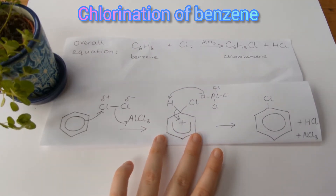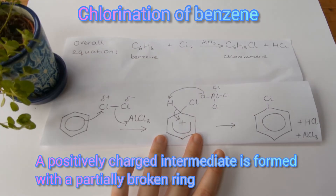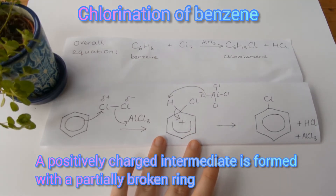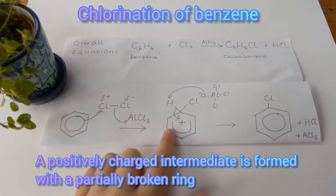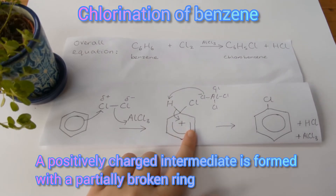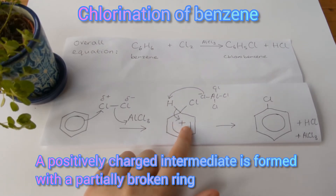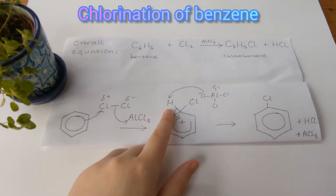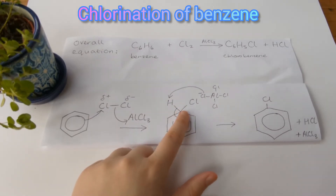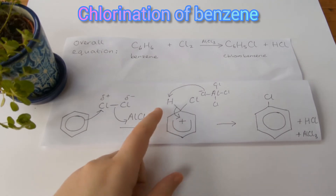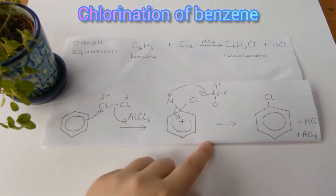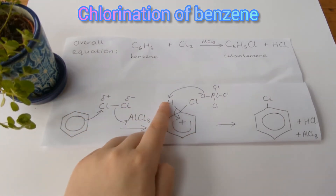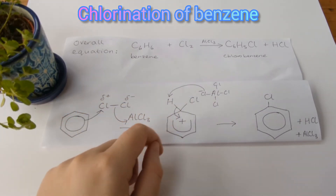In the next step, we have a positively charged intermediate. Since two electrons from the benzene ring have moved to form a bond to chlorine, that breaks the ring. So we have a partially broken ring here, which means we also have a positive charge. The hydrogen shown here was always present — this is a type of skeletal formula where we have carbons at each point with one hydrogen coming off each carbon that we just don't normally show. The reason we've shown the hydrogen here is because now it's involved in this step.